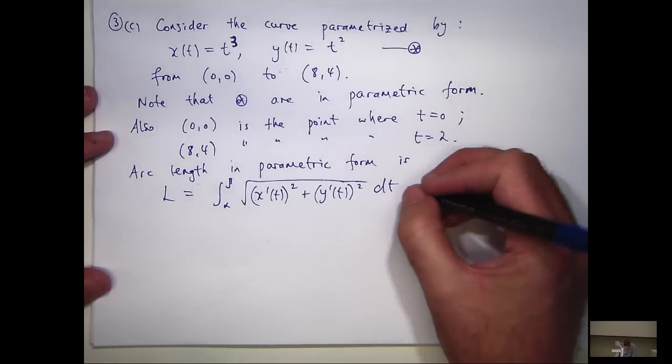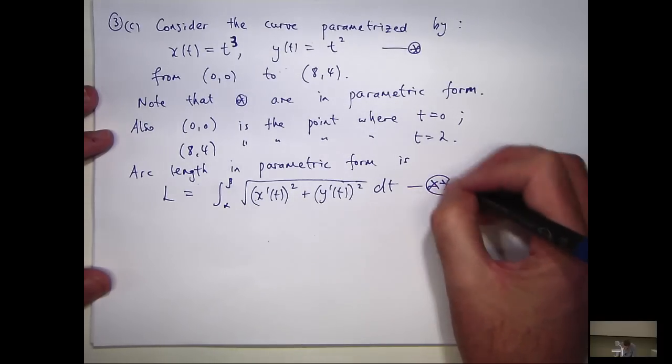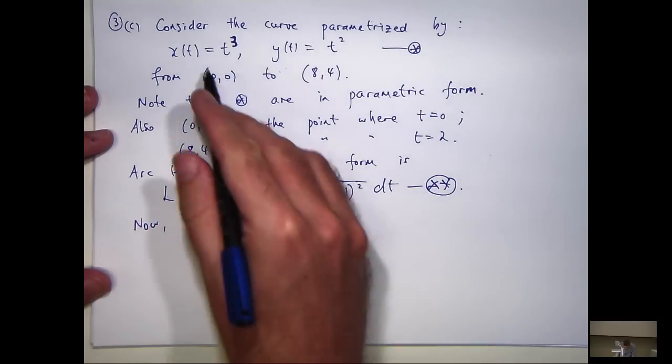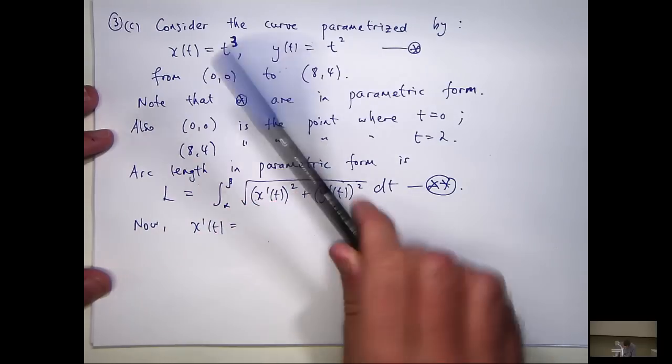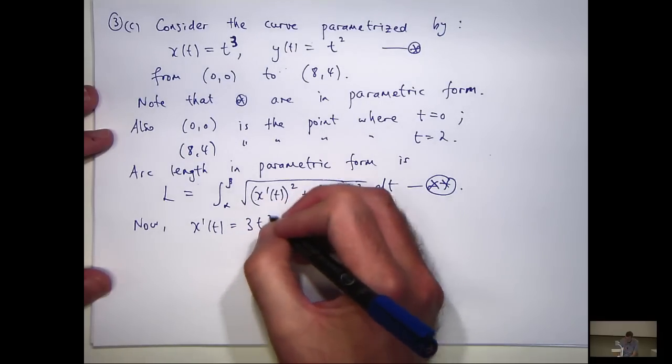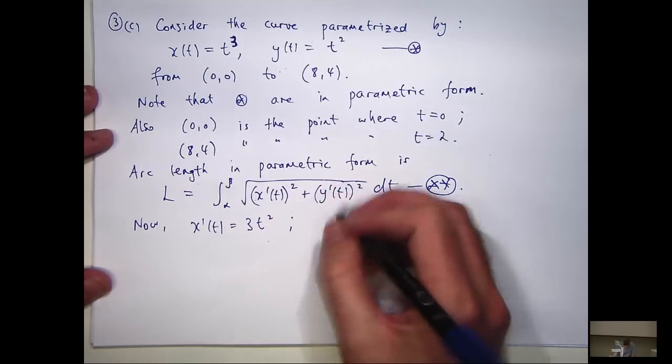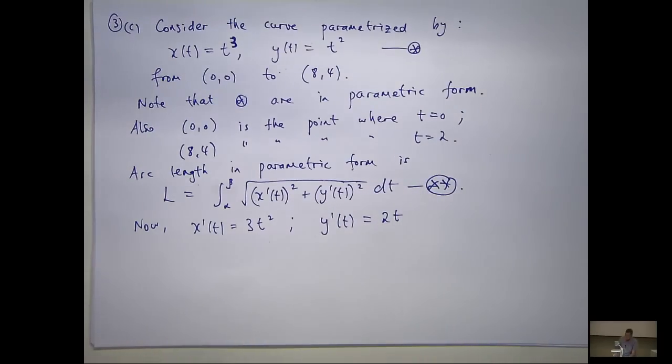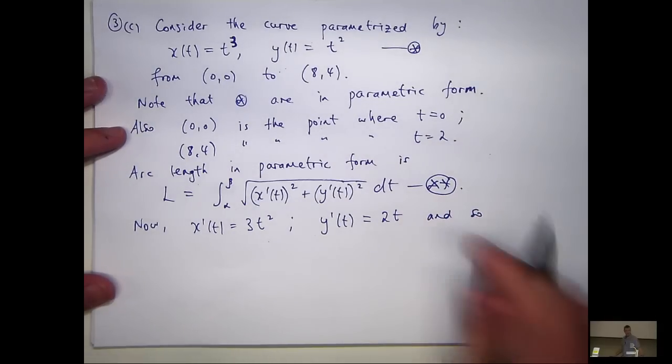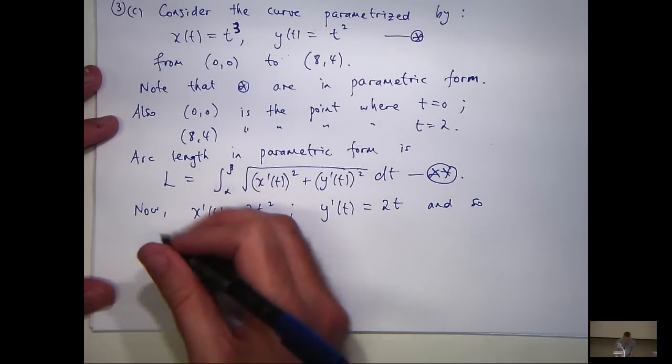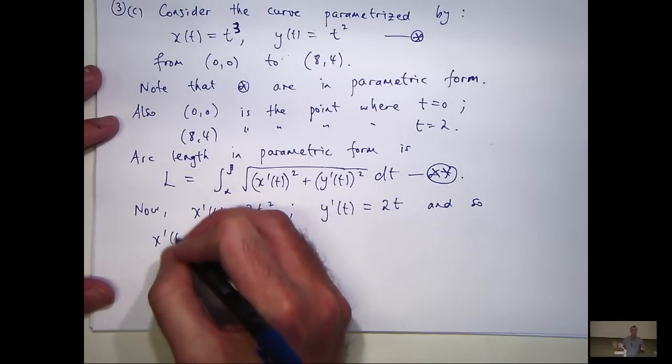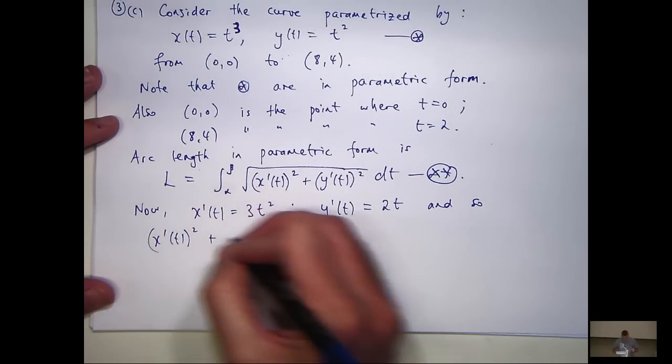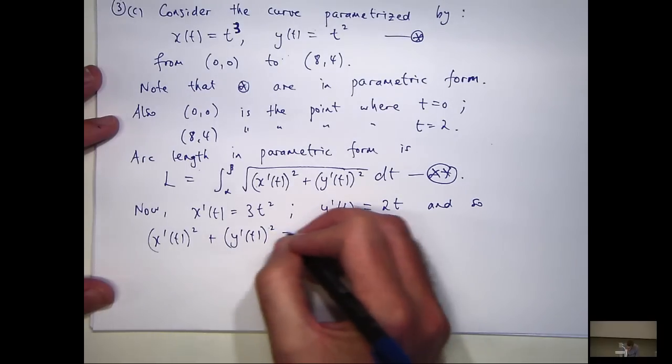Okay, so, I'm going to call this double star. So, let's calculate these derivatives. X prime is going to be three t squared. Y prime is going to be two t. So, let's square these, add them together, and see if we can manage this square root sign away.